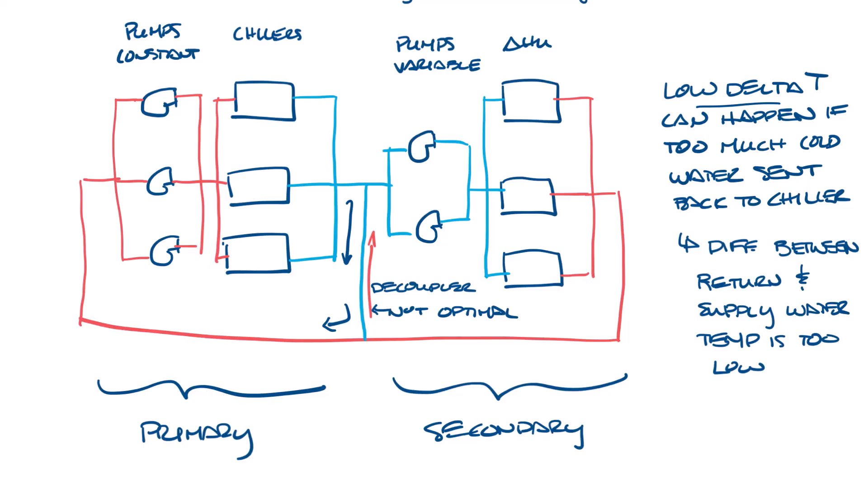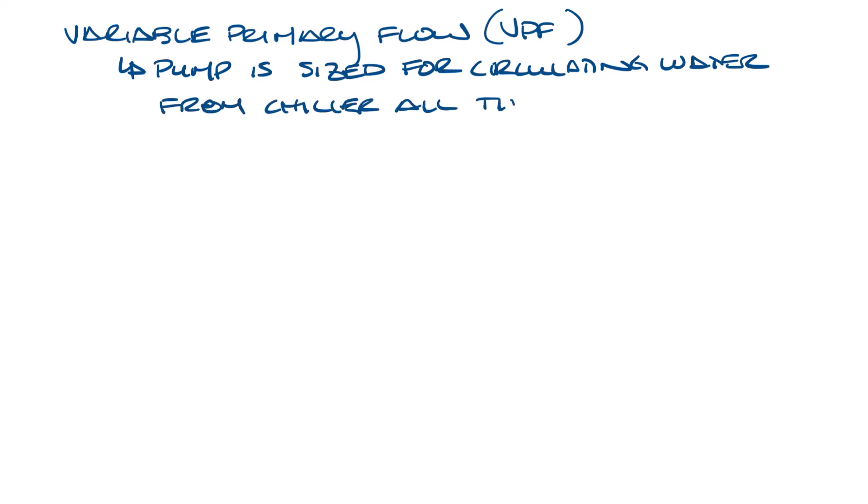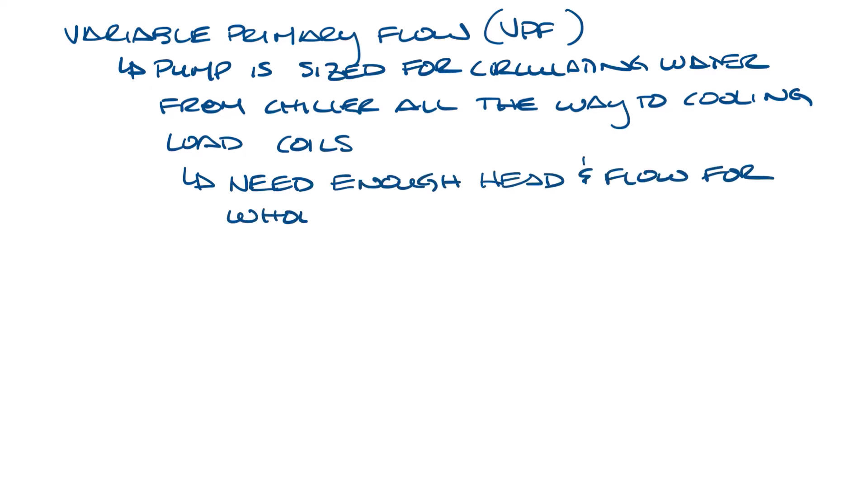So let's move this over and look at the variable primary flow circulation system. Here the primary pump is sized for circulating chilled water through the chiller and all the way to the cooling coil loads. That means that the pumps have to be sized with enough head and flow to get the water through the whole system.